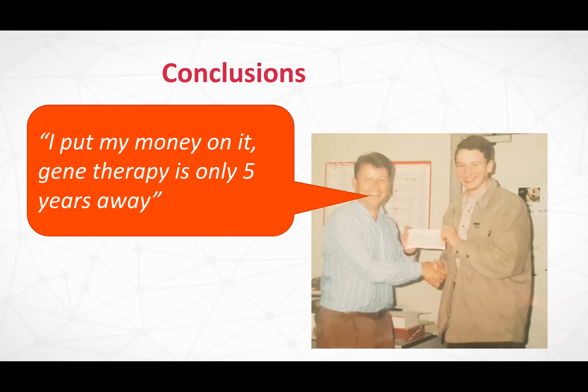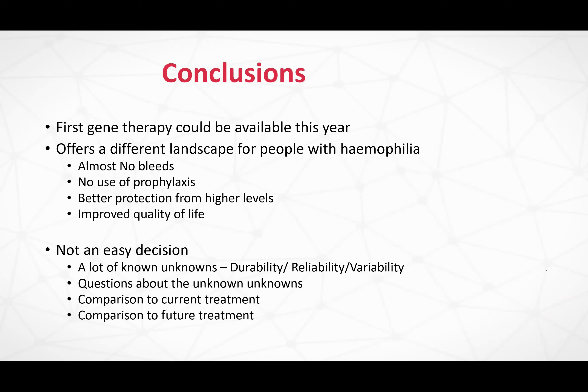In conclusion, for the first time gene therapy could be available this year in the US and probably early next year in Europe. It offers a totally different landscape for people with hemophilia — almost no bleeds, no use of prophylaxis, better protection levels, better protection for joints over a longer period, and a significantly improved quality of life, however you want to define that. It's not an easy decision — there are a lot of considerations. We can compare it to current therapies, but we also need to compare it to future therapies.